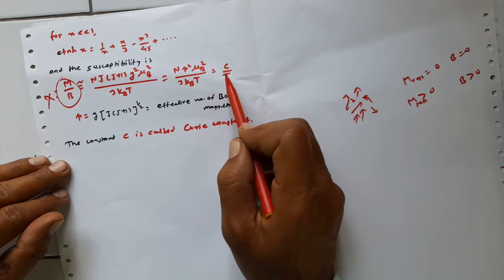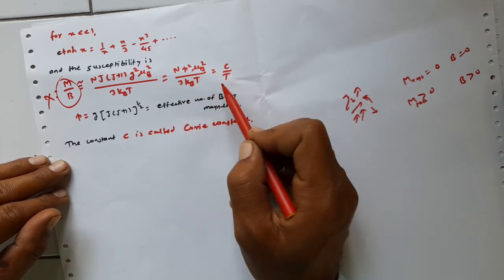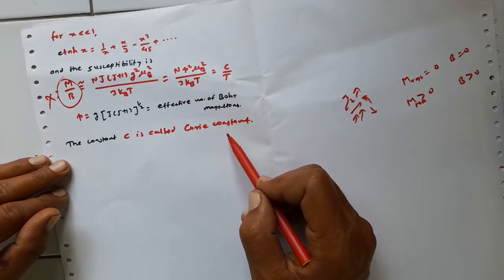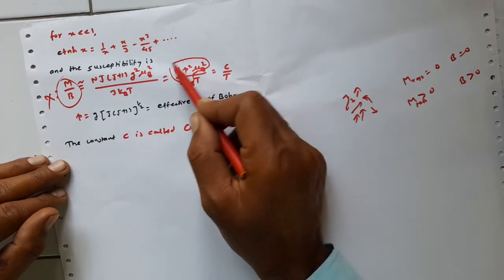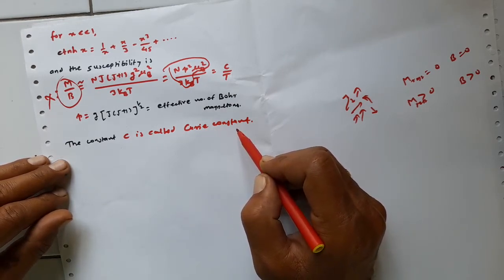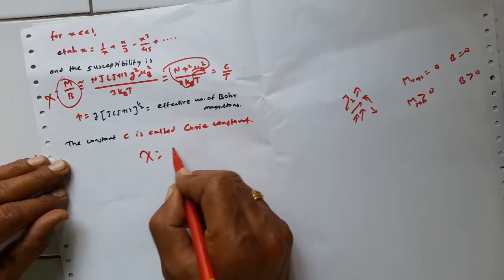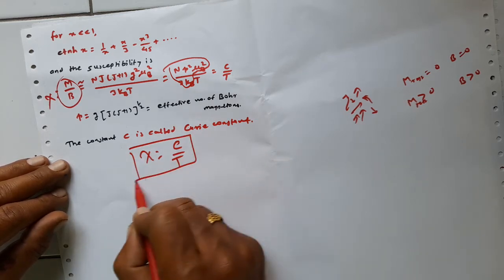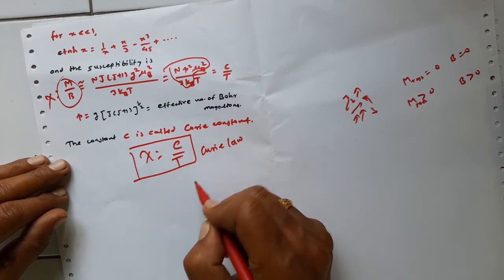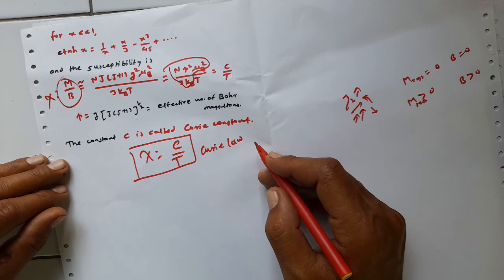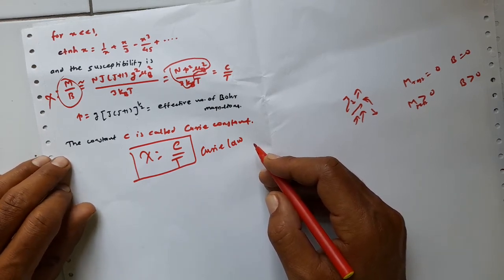The susceptibility χ is proportional to p², and all other terms are constant except temperature. This defines the Curie constant C, so χ = C/T. This result is known as the Curie–Brillouin law, commonly called the Curie law, and gives a straight-line behavior in a plot of 1/χ versus temperature for paramagnetic ions.